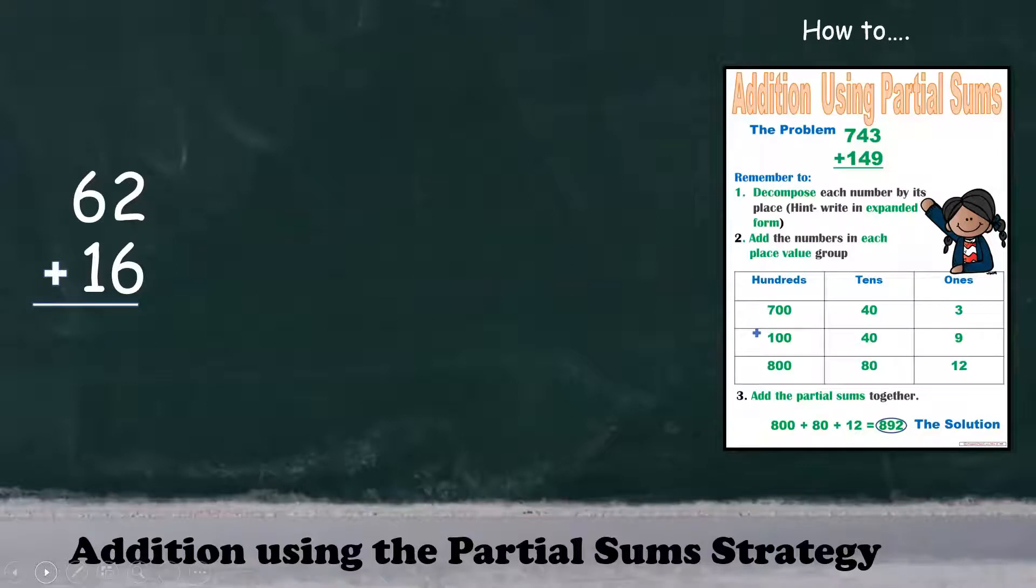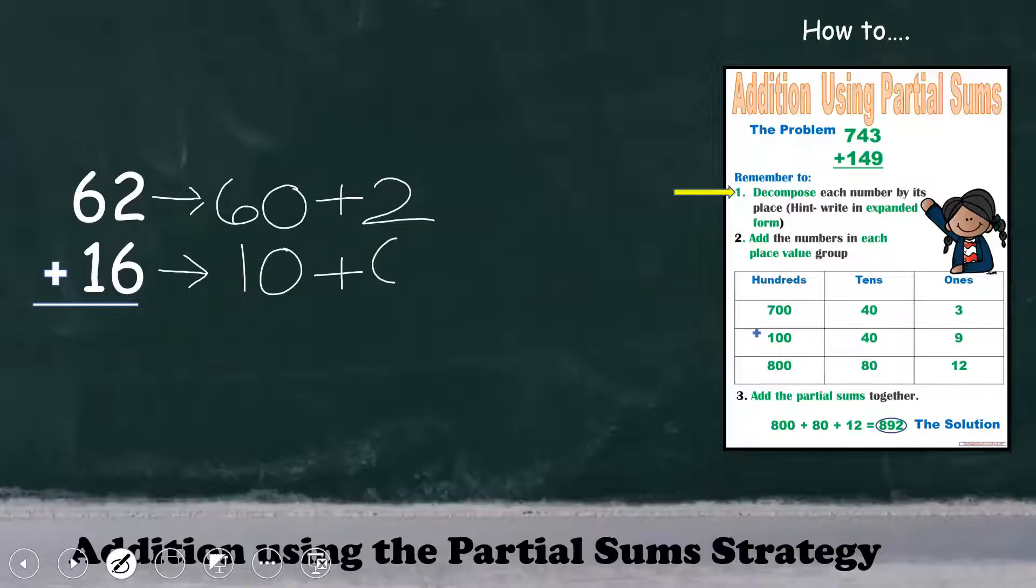Let's see how it works by using this example. First, we must decompose each number by writing it in expanded form. Since we have a six in the tens place, that's 60 plus two ones. We also have a one in the tens place and six ones. Step two, we're ready to add the place value groups. Six ones plus two ones is eight ones.